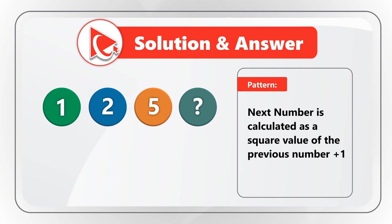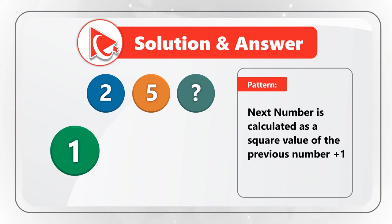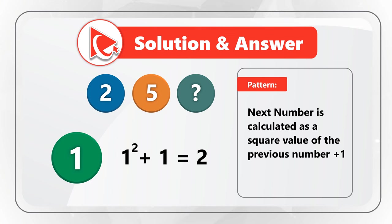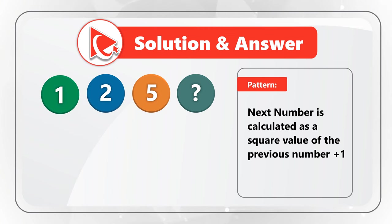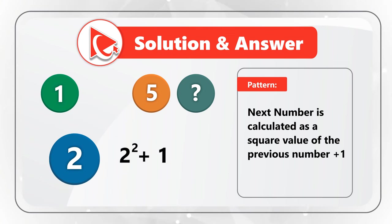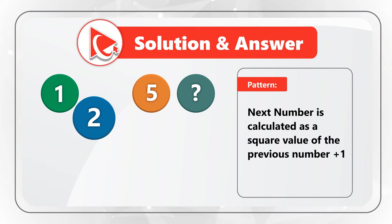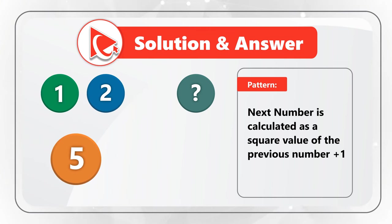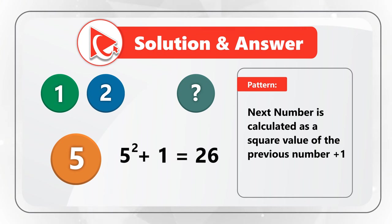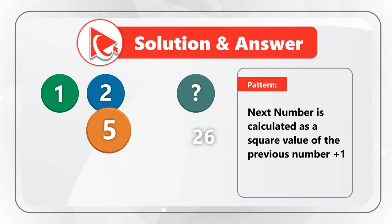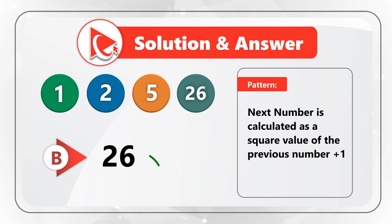The second number is 1 squared plus 1, which equals 2. The third number is 2 squared plus 1, which equals 5. That means the missing number is 5 squared (which is 25) plus 1, which equals 26. So the correct answer is choice B, 26.